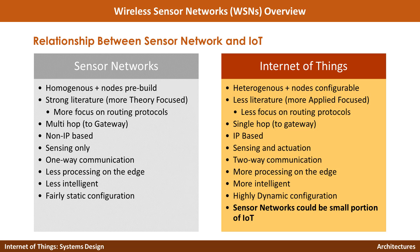In sensor networks, the nodes are pre-built and homogeneous — built for a particular purpose and all nodes are identical. In Internet of Things, there is a lot of opportunistic nature, meaning the sensors used in a particular IoT application could be heterogeneous. Some sensor nodes may not be deployed by you and you are temporarily getting access to them. IoT nodes are also reconfigurable — over time you may add more sensors, add actuation, and improve the firmware. But in sensor networks, nodes are pre-built, deployed, and that's it.